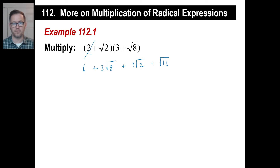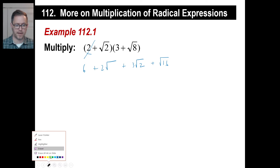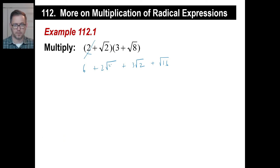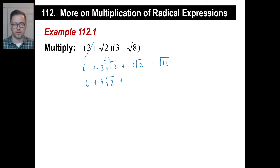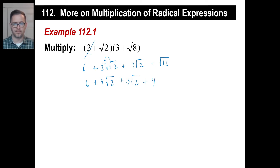We can break down the square root of 8. Anytime you see something you can simplify, go ahead and do it. This simplifies to 4 times 2, so the square root of 4 comes out and becomes a 2. So let's redo it: we have 6 plus 2 times 2, which is 4, square root of 2, plus 3 square root of 2. And by the way, the square root of 16 is 4. It looks like we have like terms here: 6 and 4 gives us 10. And 4 square root of 2 plus 3 square root of 2 is 7 square root of 2.